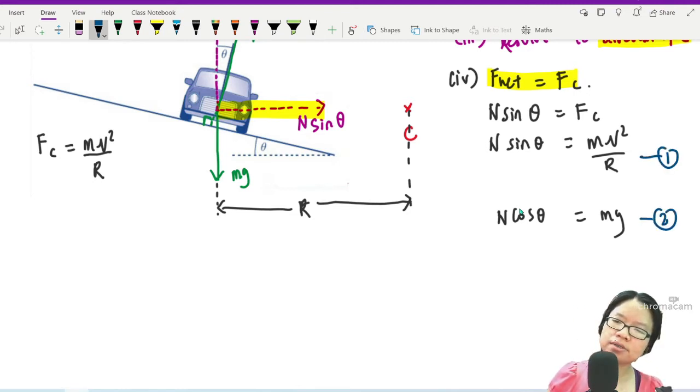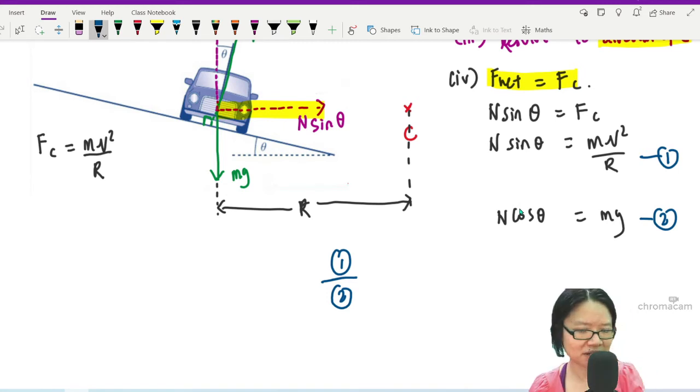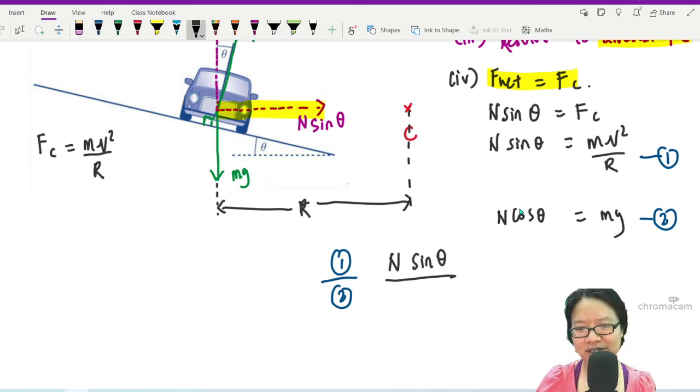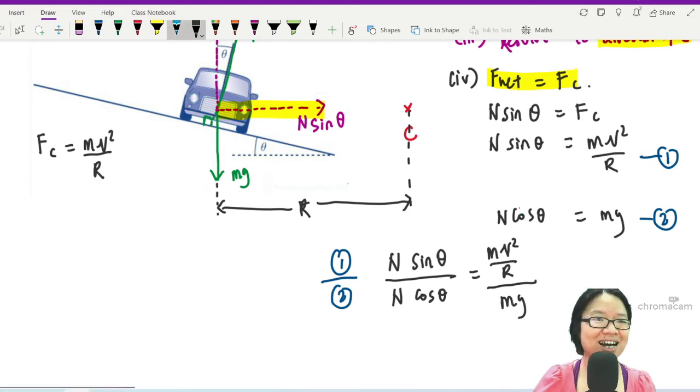What should we do? I think we shall divide them. Hopefully you're also familiar enough with dynamics to see if you have a sine theta and a cosine theta, you can divide them. The N will cancel and sine theta over cosine theta is tangent theta. So N sin θ over N cos θ: N sin θ from equation one is mv² over r, and N cos θ from equation two is mg. N will cancel, m will cancel, sine theta over cosine theta is tangent theta. This would be v² over rg.